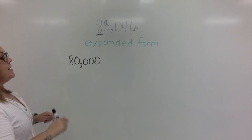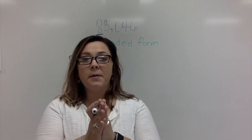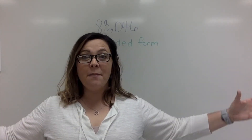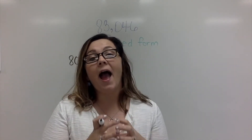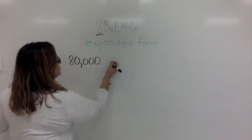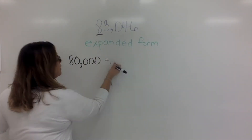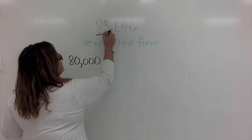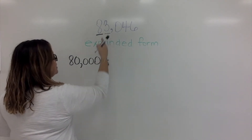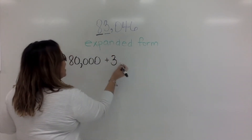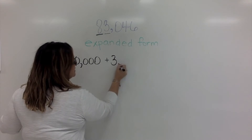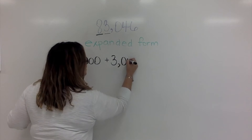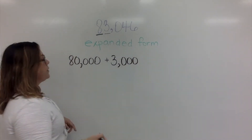When we are doing expanded form, we're taking values, but our end result has to be the same number — so that means we're taking these values and adding them all together. After this first value I'm going to put a plus sign and move on to my second digit. My second digit is a 3, and because it's in the thousands place, that 3 has a value of 3,000 — that means three zeros after the digit.